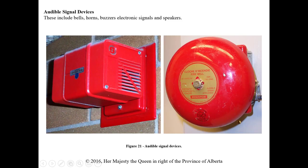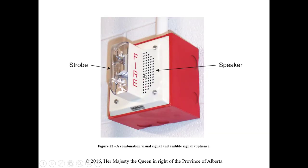Audible signaling devices include horns, buzzers, electronic signals, and speakers. Once a smoke detector, heat detector, flame detector, or pull station detects an issue, these devices alert everyone in the building. In a two-stage system, the first-stage alert may only activate strobes without horns — for example, in a movie theater the strobes began going off without a siren, which is the alert portion of a two-stage system.